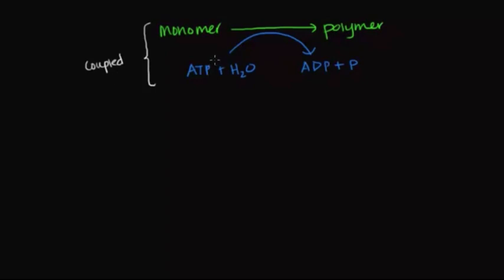In fact, almost always, ATP is directly involved in the chemical reaction that it's fueling by directly donating or transferring one of its phosphate groups to the reaction. And in this case, in our example, it donates the phosphate group directly to the monomer.